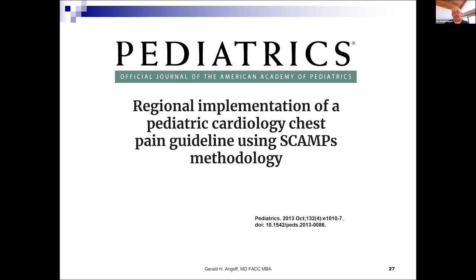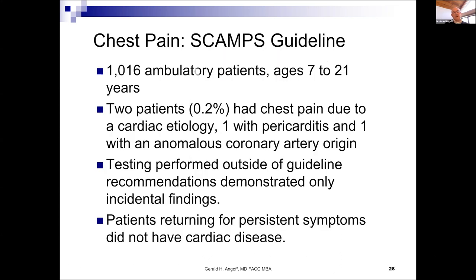A second study used a prospective chest pain evaluation guideline known by the acronym SCAMPS. Here there were just over 1,000 patients, and two out of 1,000 — or 0.2% — had chest pain due to a cardiac cause: one with pericarditis and one with an anomalous coronary artery. Testing outside the guideline recommendations demonstrated only incidental findings, and patients returning for persistent symptoms did not have any cardiac disease.